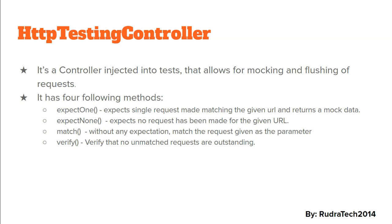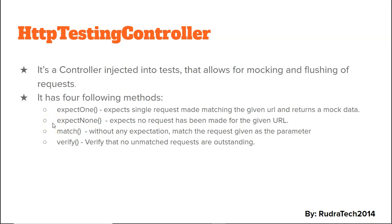The first method is expectOne, which expects a single request matching the given URL and returns the mocked data. The second is expectNone, which expects that no request has been made from the given URL. The third is match, which searches for requests matching the given URL without any expectation. The fourth is verify, which verifies that there are no unmatched outstanding requests, meaning there are no pending requests and we can move ahead with our testing.